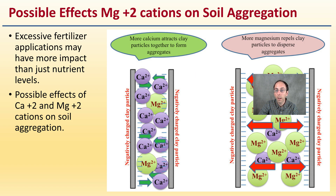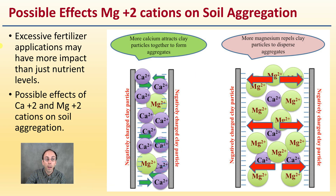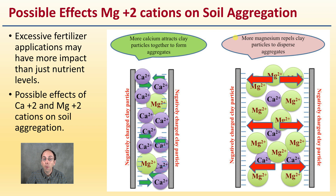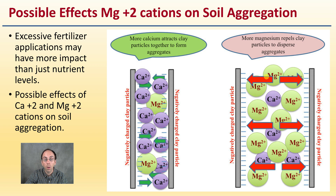What are the possible effects on soil aggregates as well? Excessive fertilizer applications may have more impact than just nutrient levels. More calcium attracts clay particles together to form aggregates, forming a well-defined structure, versus more magnesium repels clay particles and breaks apart those aggregates. The aggregates are important because we want them to have cation exchange capacity and interact with the roots. If we over-add magnesium, we cause repelling or breaking apart of that basic soil structure.